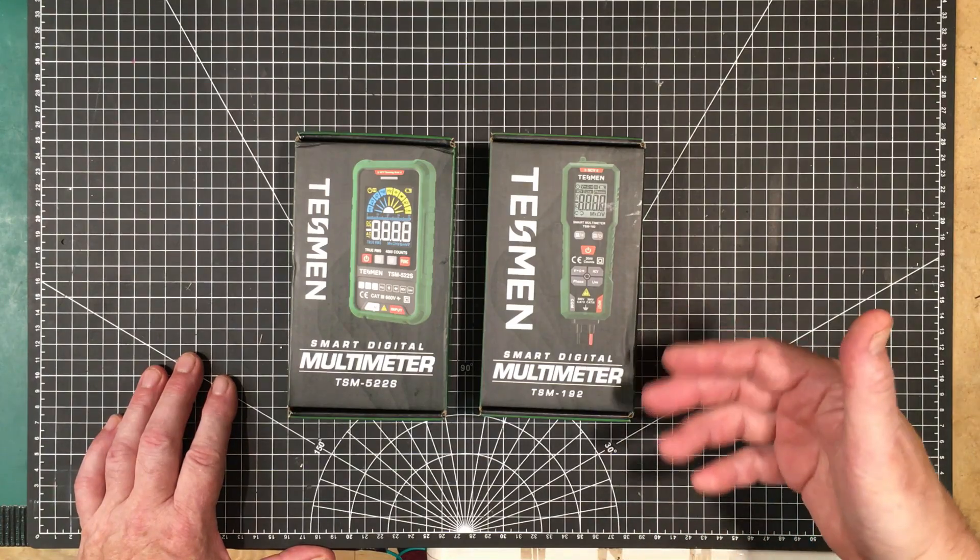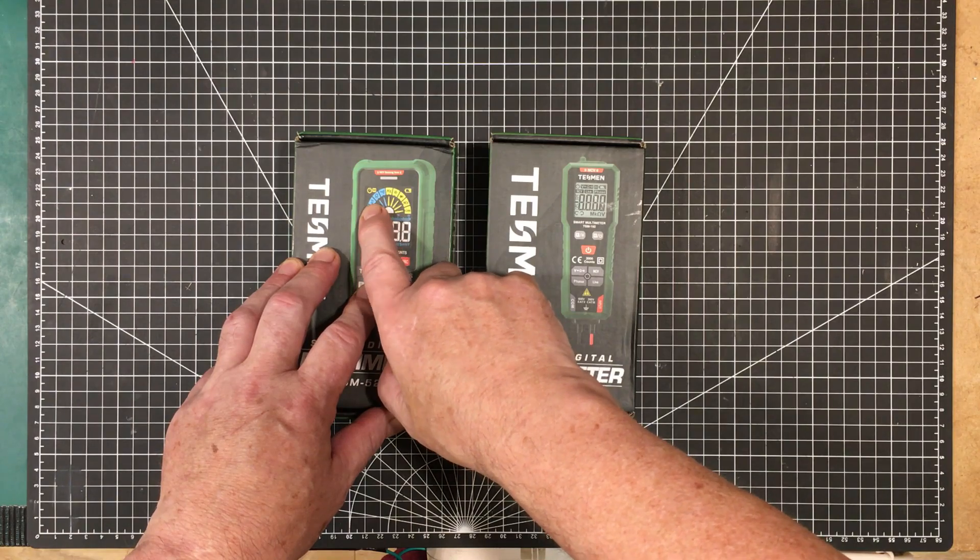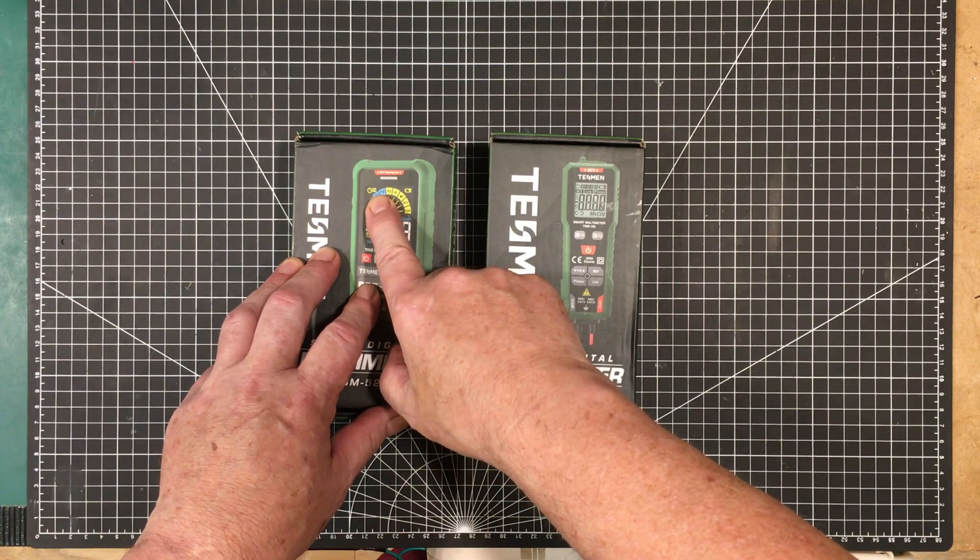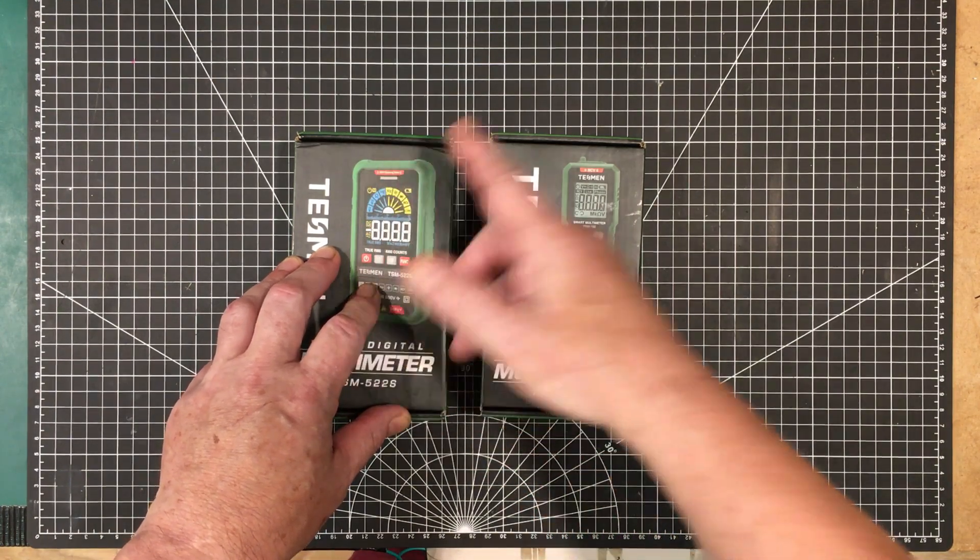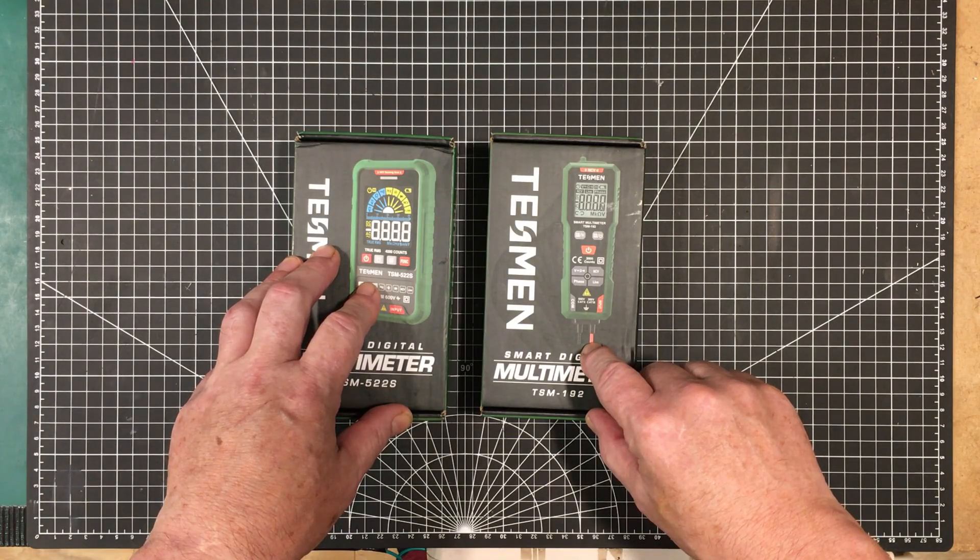And let's see how well they work, especially in the auto mode because auto mode covers voltage DC, voltage AC, ohms, and continuity. And for your average homeowner that's generally going to be about 90% of what they're going to need a meter for.